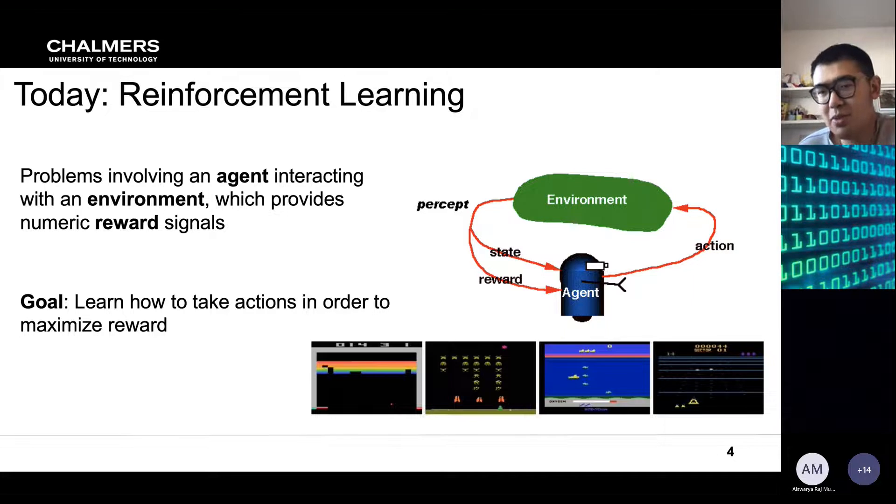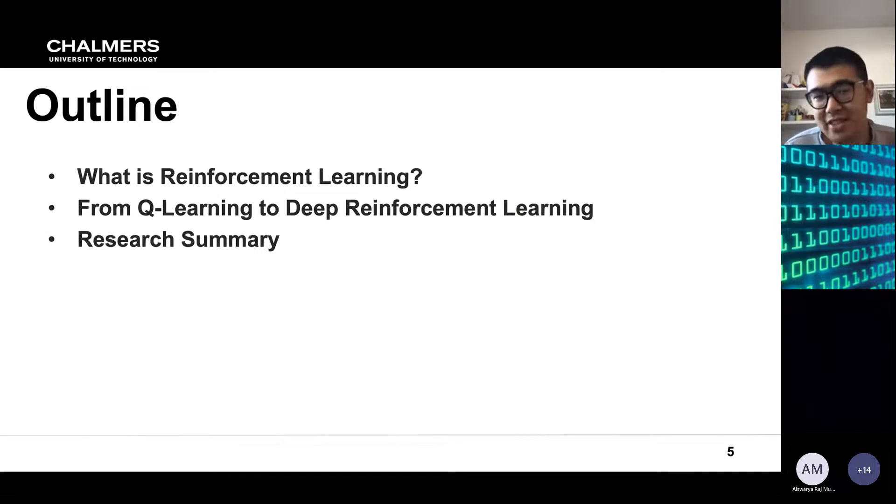So today I would like to first present the basic concept of reinforcement learning and I would like to introduce from the basic reinforcement learning algorithm which is Q-learning to the deep reinforcement learning algorithm which is the DQN algorithm. And I will also try to summarize my recent research where we have developed two different mechanisms based on the DQN to improve the algorithm's training efficiency and also make it converge faster and deliver better action decision making.